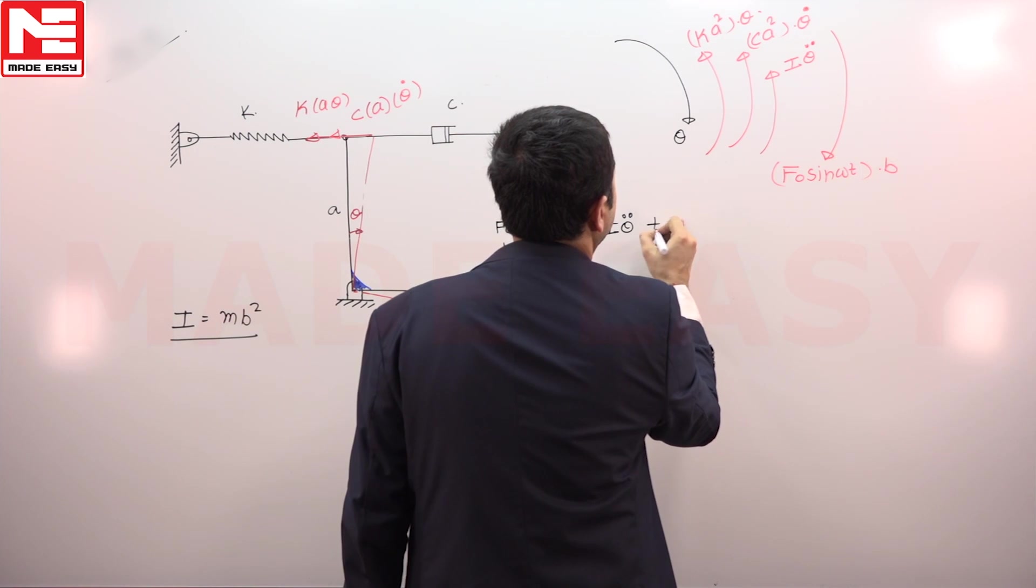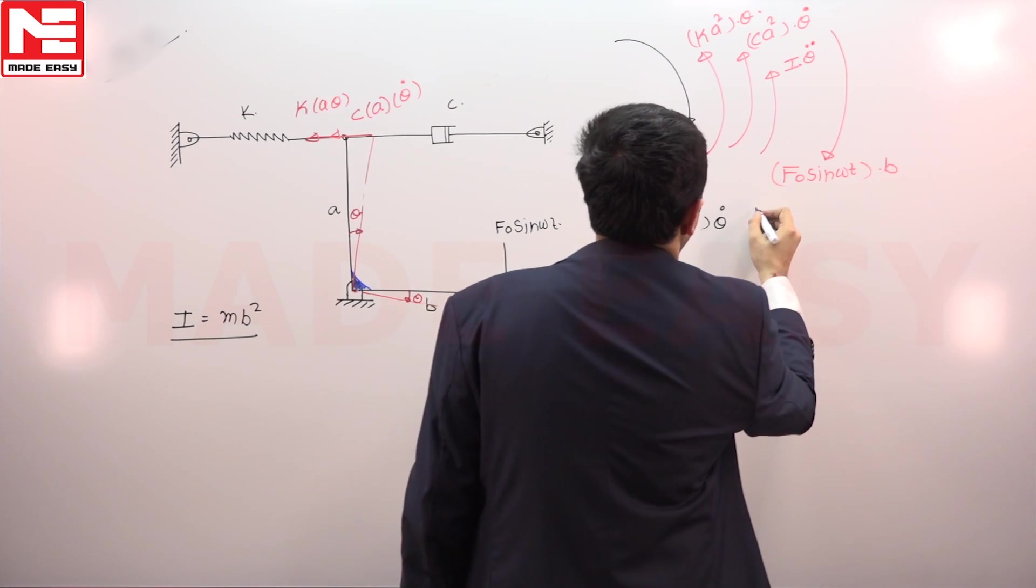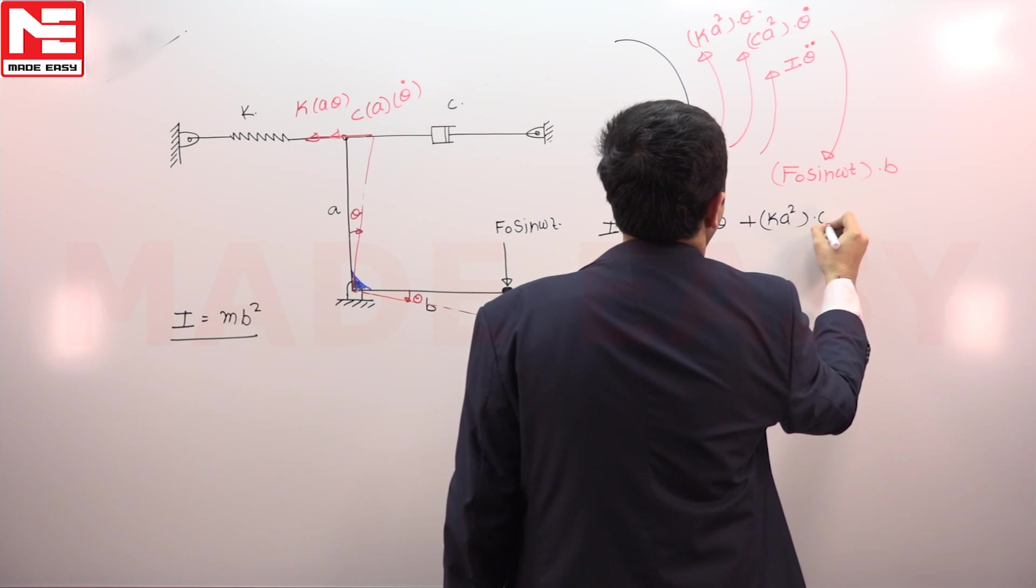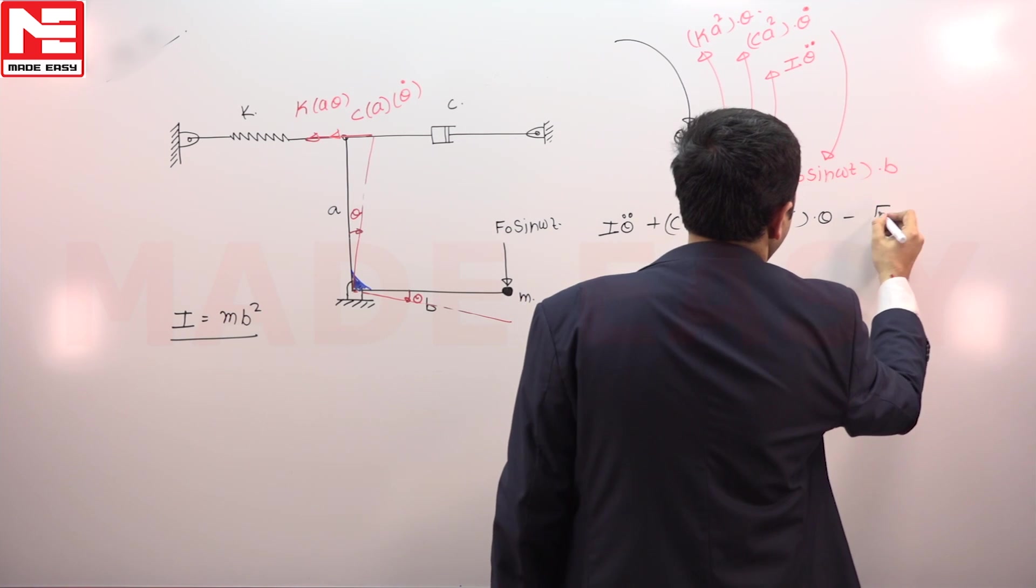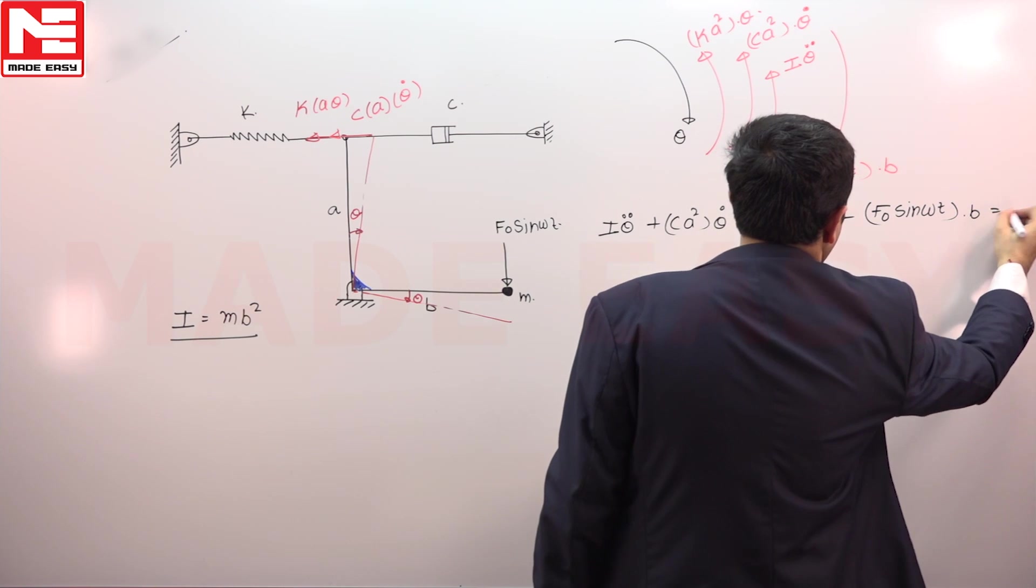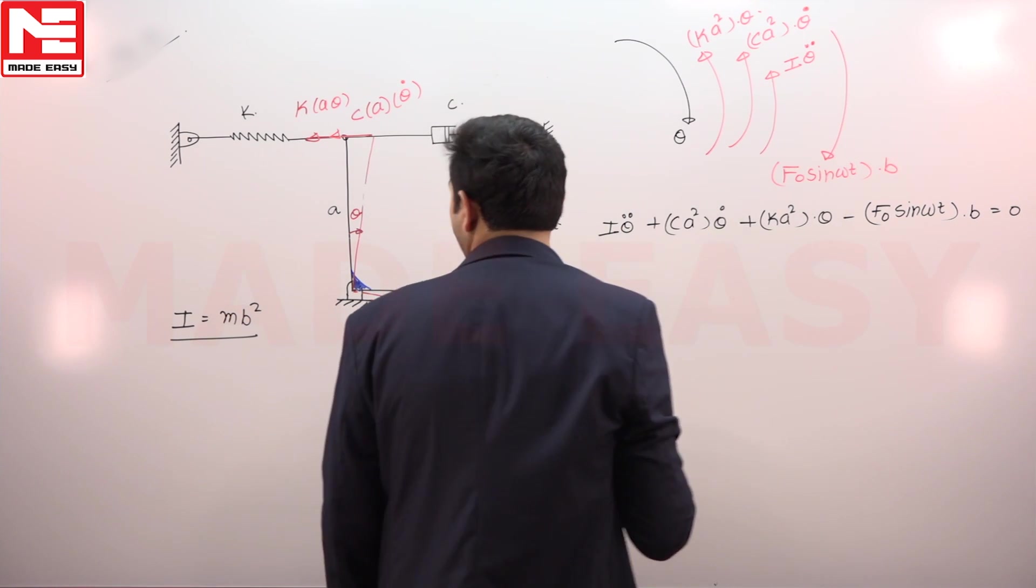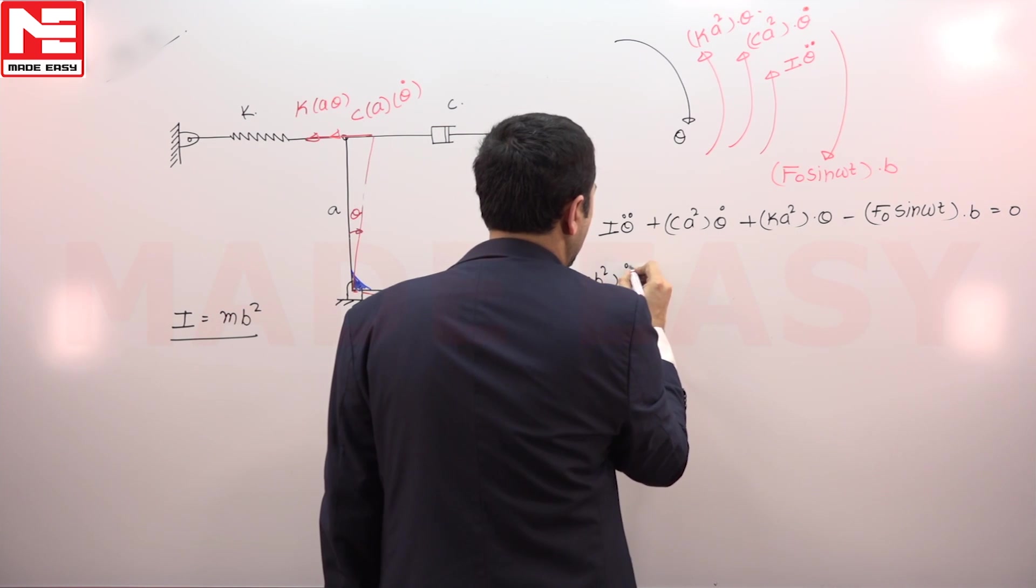So that is a clockwise torque. The summation of these all forces will become zero—that is a D'Alembert concept. So we can say this is I theta double dot plus c a square theta dot plus k a square into theta equal to minus F naught sine omega t into b must be equal to zero.